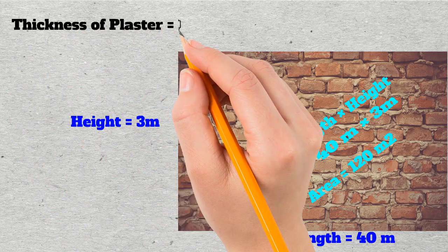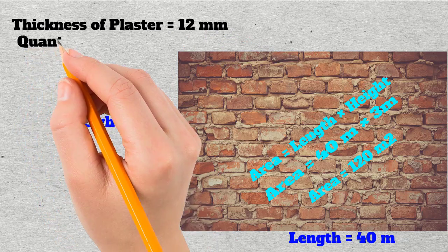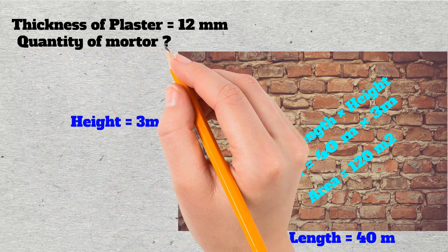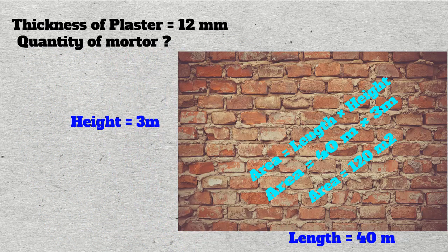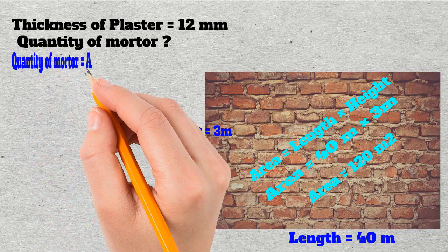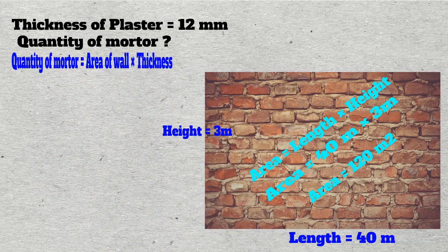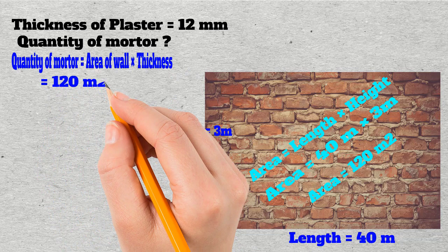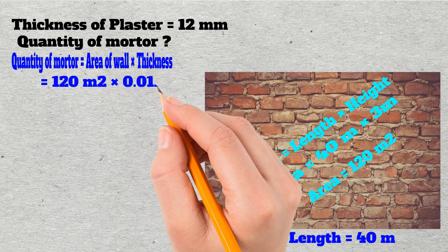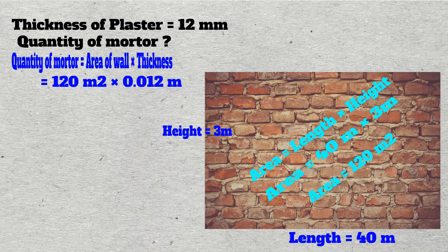Consider 12 mm thick plastering for the wall. Now the question is how much quantity of mortar will be required for this wall. Let's calculate it. The quantity of mortar for uniform thickness is equal to area of the wall, that we already calculated, multiplied by the thickness. By putting the values, the area is 120 square meters, multiply by 12 mm thickness, that is 0.012 meters. By calculation, we get the mortar quantity, that is equal to 1.44 cubic meters.